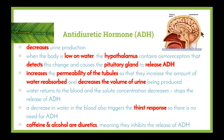A decrease in water in the blood also triggers the thirst response. Once we drink, there's no need for ADH to be released. Caffeine and alcohol are two substances that are diuretics — they inhibit the release of ADH. ADH stops us from going to the bathroom when we don't need to, whereas diuretics such as caffeine and alcohol increase the amount of urine we produce.